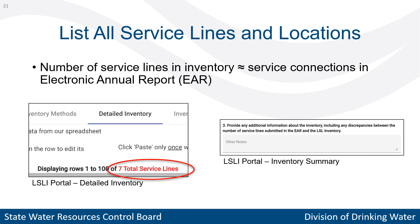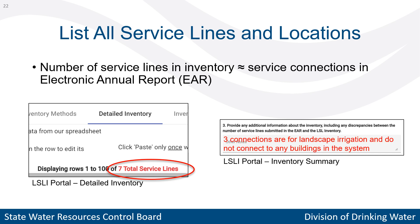During our reviews, we also check to see that the number of service lines in the inventory is about equal to or greater than the number of service connections reported in the Electronic Annual Report, or EAR. In the portal, the total number of service lines is shown at the top of the detailed inventory, circled in red. If there are fewer service lines than connections, please add a brief explanation in the Inventory Summary section on the portal. For example, if your system reported 10 service connections in the EAR and there are only 7 service lines in the inventory, we would want you to explain why in Question 3 of the Inventory Summary — you might write something like, '3 connections are for landscape irrigation and do not connect to any buildings in the system.'